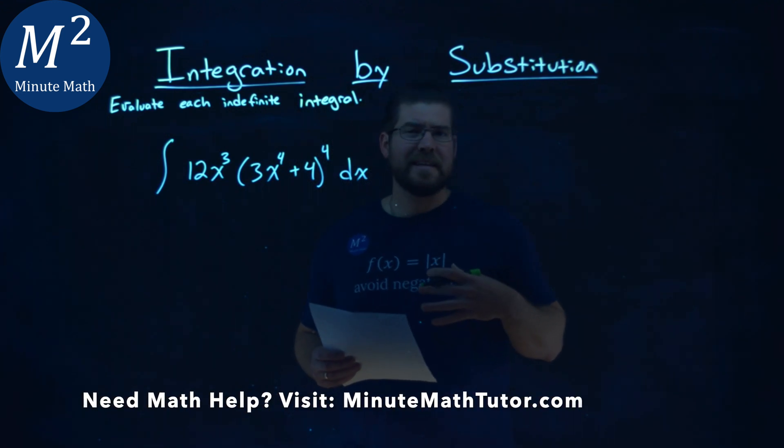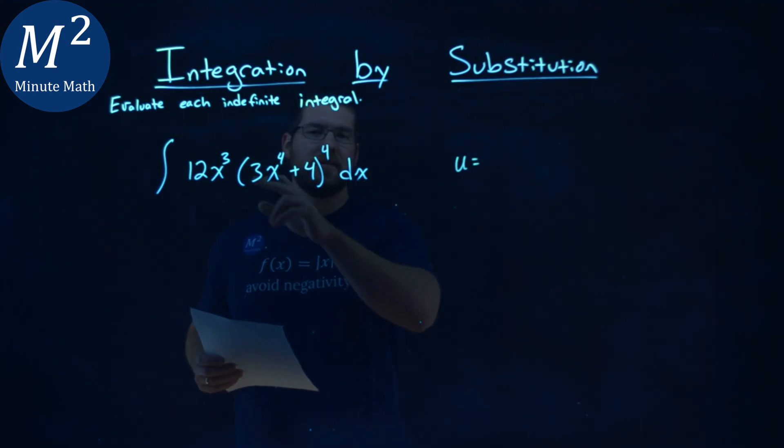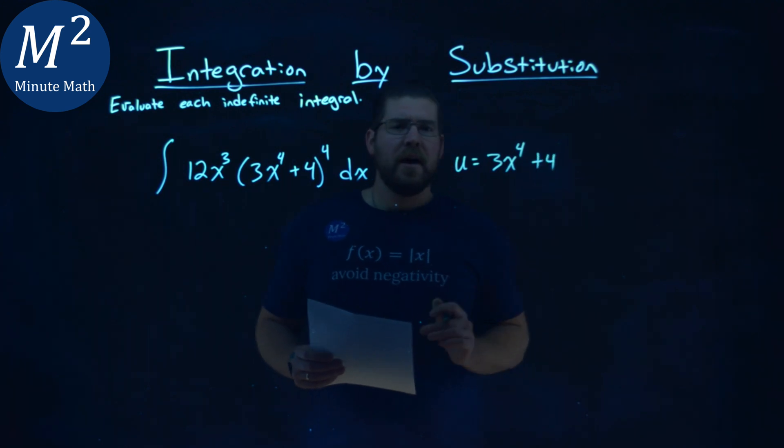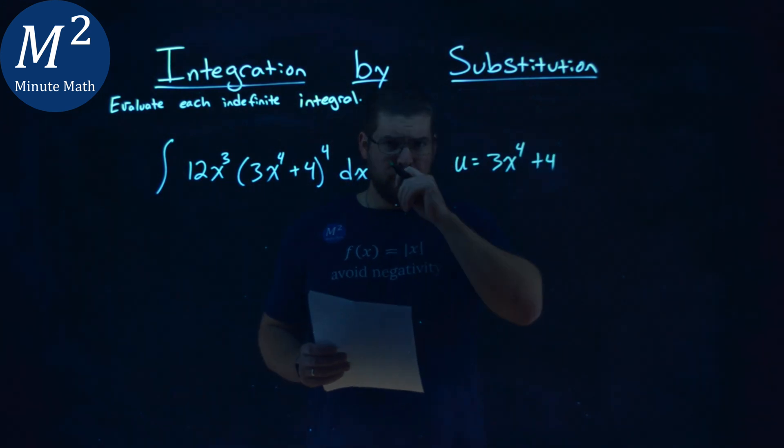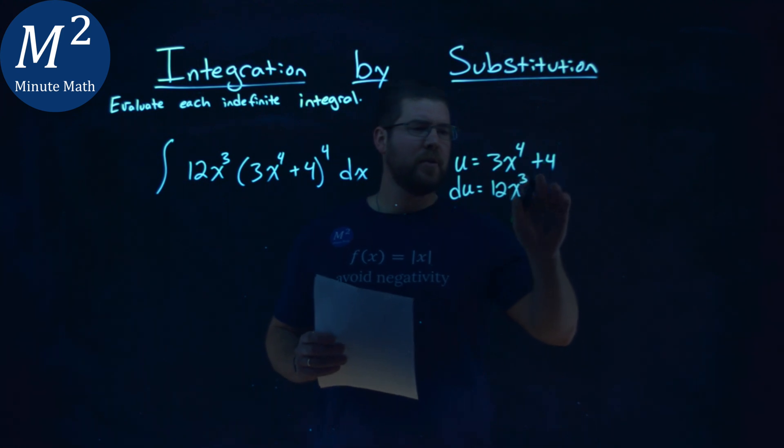First thing I want to do is find a u value, and my gut tells me the u value is going to be what's inside the parenthesis. So let's try that: 3x⁴ + 4. If we set that as u, we need to find a du value. So du equals, by the power rule, 4 times 3 is 12x³. The derivative of +4 is 0, don't worry about it, and we have dx.